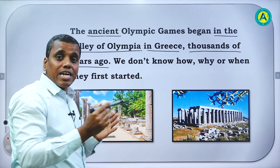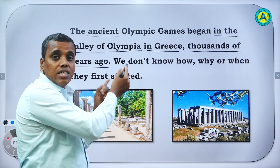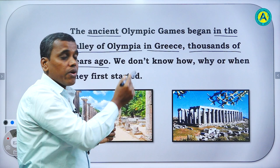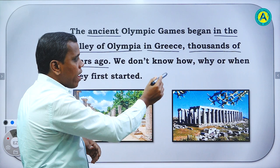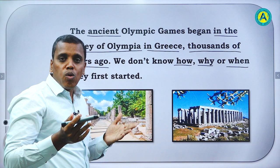So, the ancient Olympic games — that means now it is the modern Olympic games, and this was the ancient Olympic games. The ancient Olympic games began in the valley of Olympia in Greece. We don't know how, why or when they first started.